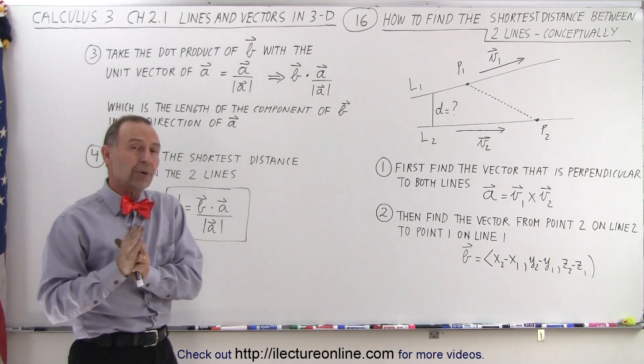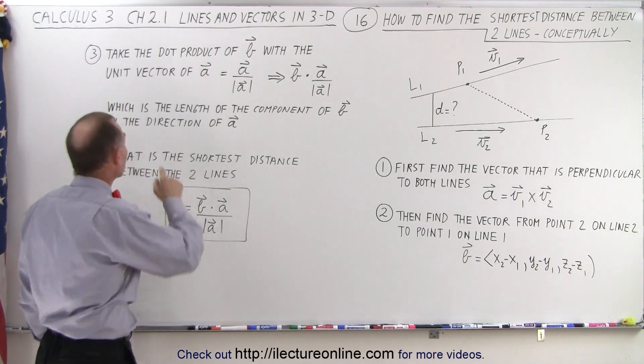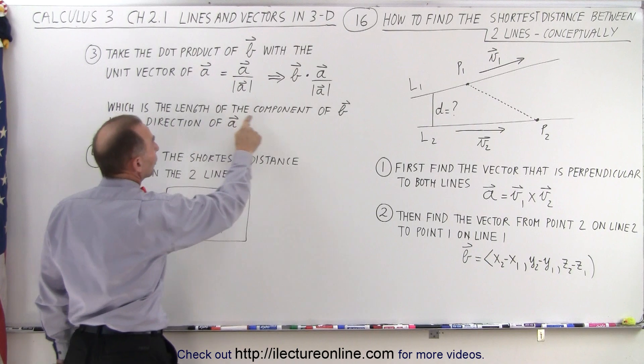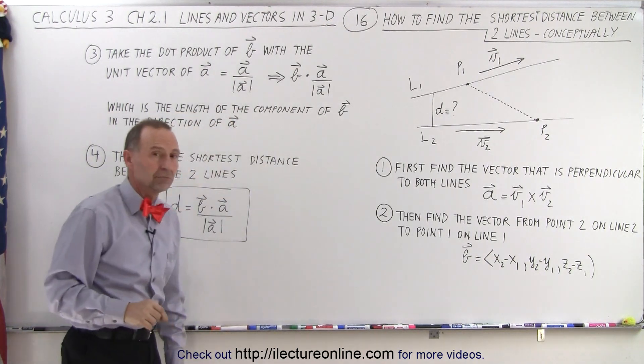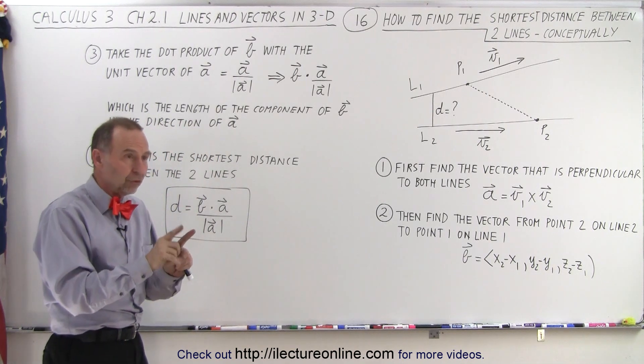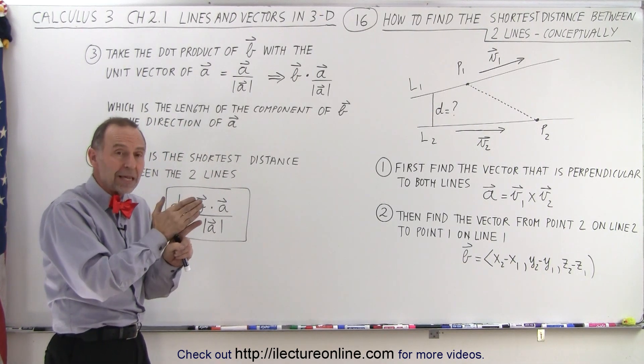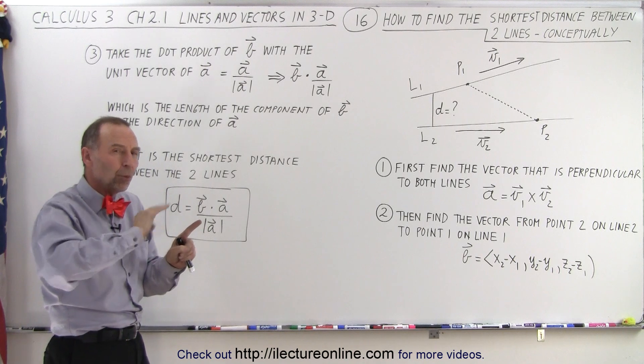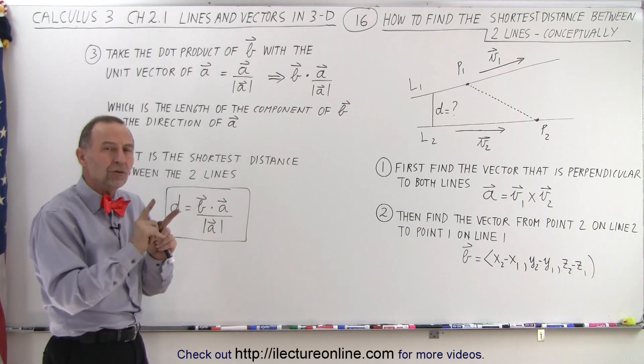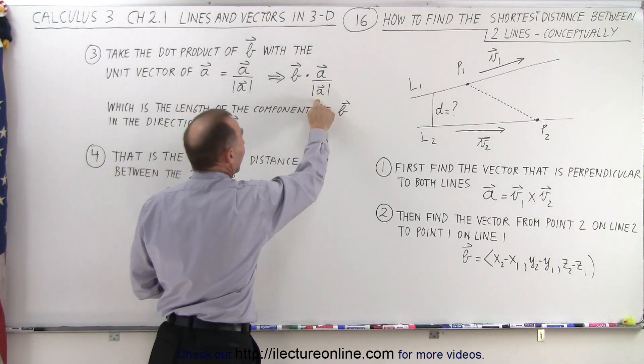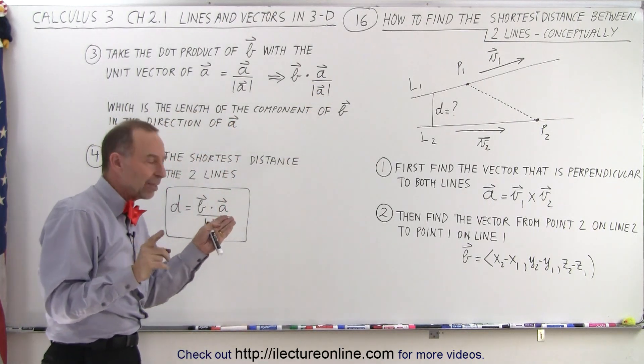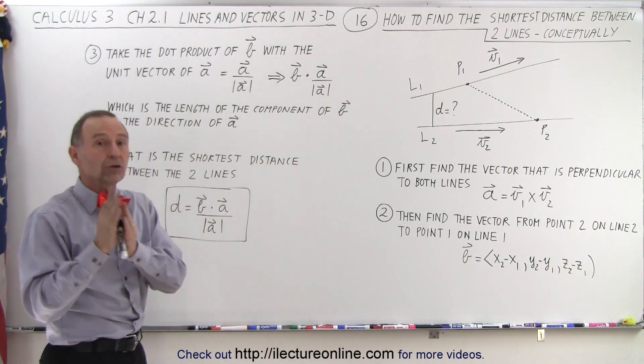If we then take the dot product, what do we end up with? We end up with the length of the component of B in the direction of A. So, we take the dot product. So basically, we take the projection of B onto A, but we don't want the magnitude of A. We simply want the direction of A. That's why we take A and divide it by its magnitude, and we simply get the component of B along the direction of A.